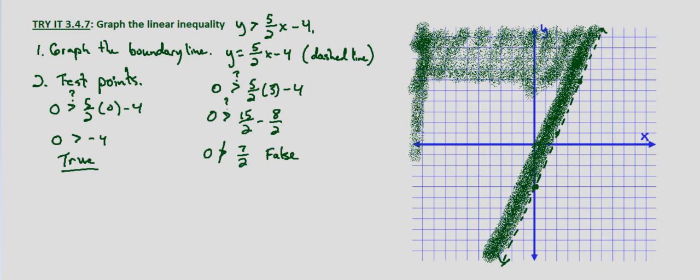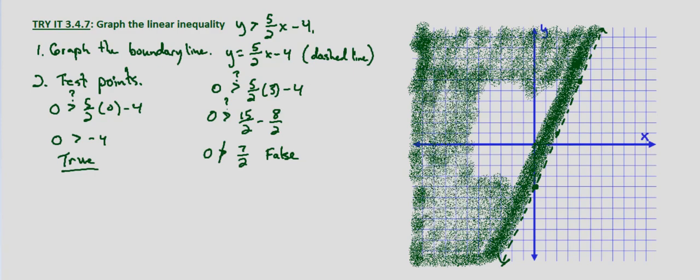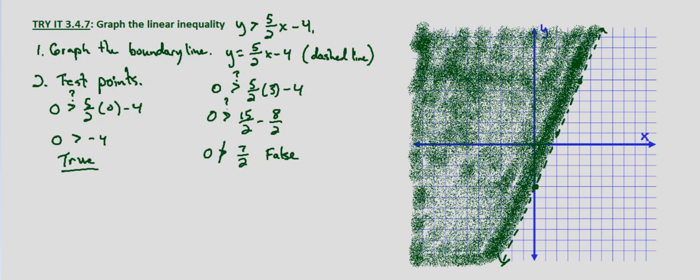Now you could fill this area any way that you want as long as it's obvious that this is shaded until we get to systems of inequalities. It's not really important how you shade, particularly as long as the correct side of the line is shaded. So this is the graph for y is greater than 5 halves x minus 4.